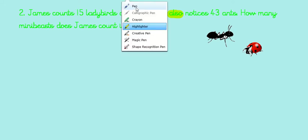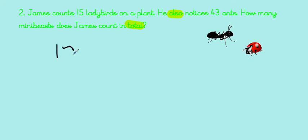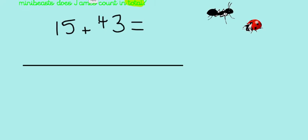What does that look like when I write it as a number sentence? 15, that's how many ladybirds I had on my plant, and then I noticed another 43 ants. I want to find out how many minibeasts I've counted altogether. So I've chosen to use my number line. I'm going to put my bigger number here. This time the bigger number comes second, it's 43. Putting it at the front is going to save lots of time. Then I'm going to split this number up into tens and ones.